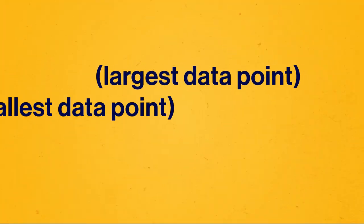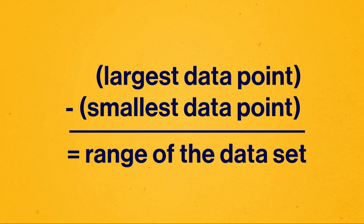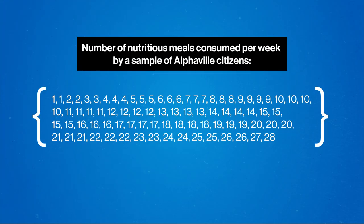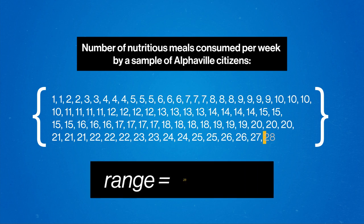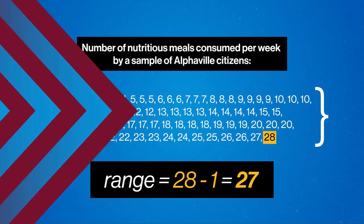One of the simplest and most straightforward measures of dispersion we can calculate is what's called the range. The range of a data set tells us the total range of numbers the data set spans, and we calculate it by taking the difference between the largest and smallest data points in our distribution. Looking at Ashley's data for Alphaville, ordered from smallest to largest, the highest value is 28 and the smallest value is 1, so the range would be 27.